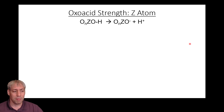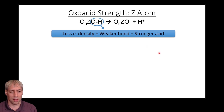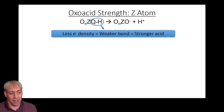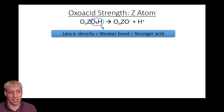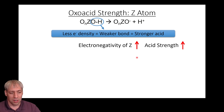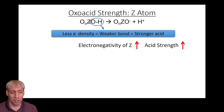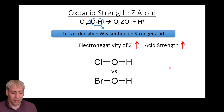For oxoacids, we can predict acid strength based on the central element Z. Think about electron density — the shared electrons in the OH bond. If Z doesn't want to share electrons with O, that makes the OH bond weaker, which makes it a stronger acid. We analyze how electronegativity of Z affects that bond. If Z has high electronegativity, it keeps electrons toward itself and doesn't donate to the OH, weakening that bond and increasing acid strength.